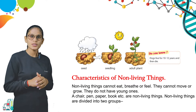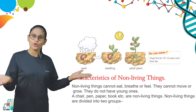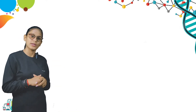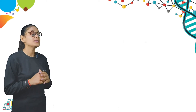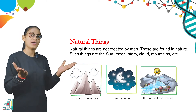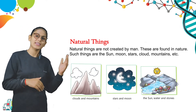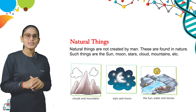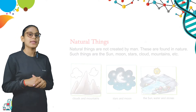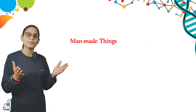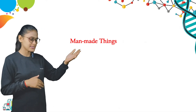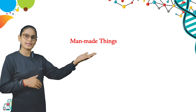Non-living things are divided into two groups. The first is natural things and the second is man-made things. Natural things are not created by man — these are found in nature. Such things are the sun, moon, stars, mountains, clouds, etc. As you can see in the pictures, there are clouds and mountains, stars and moon, the sun, water, and stones.